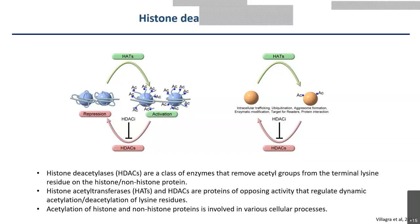HDACs are a class of enzyme that can remove acetyl groups from the terminal lysine residues on histone and non-histone proteins. Along with histone acetyltransferases, the two enzymes have the ability to make acetylation and deacetylation of the lysine residues. Moreover, it has been found that acetylation of histone and non-histone proteins is involved in various cellular processes.